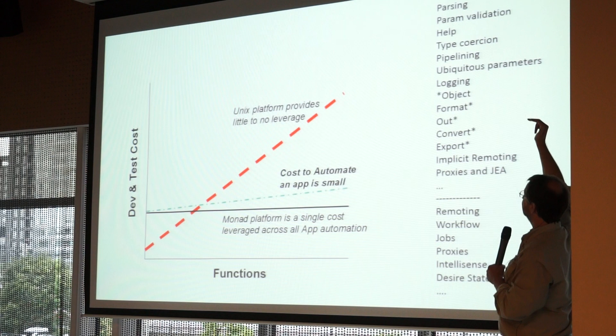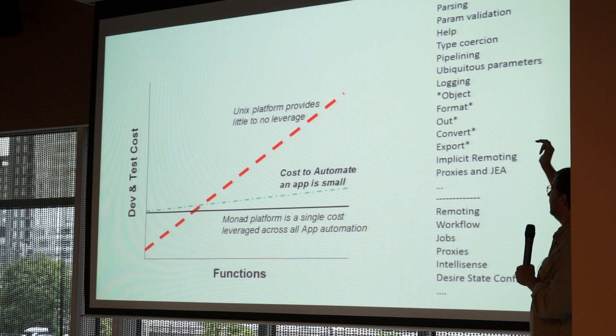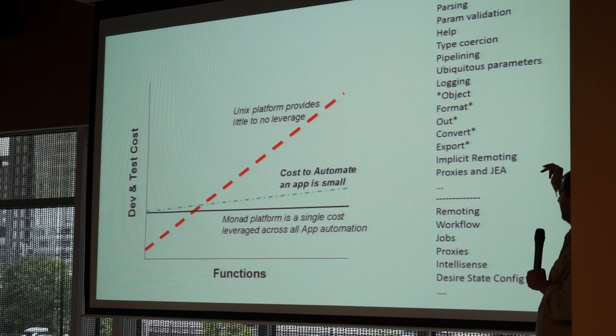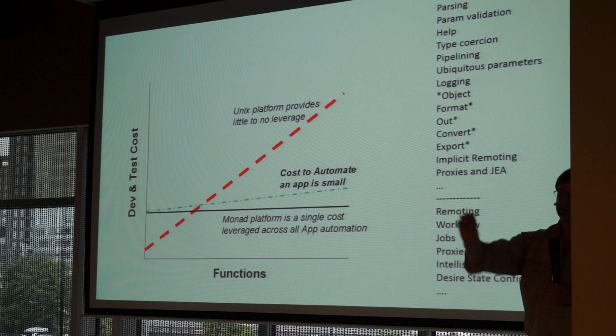I'm going to do the parameter validation, the help, the type coercion, the pipelining, ubiquitous parameters, logging, object utilities, formatting, outputting, converting, exporting, implicit remoting, proxies, just enough administration. You get all that for free. You only write the code you and only you can do.